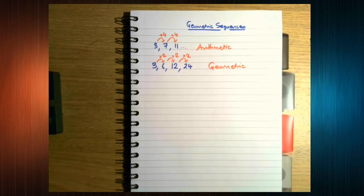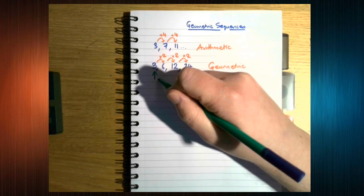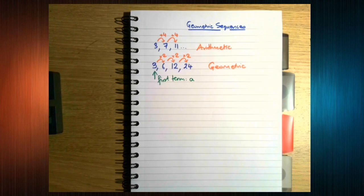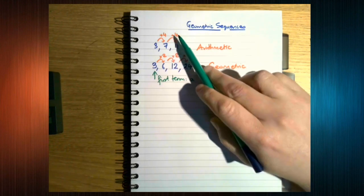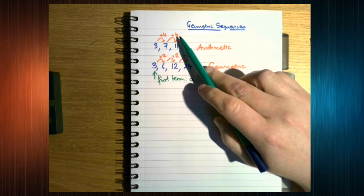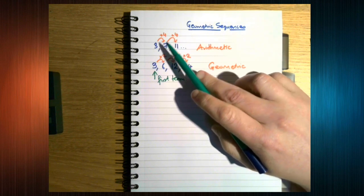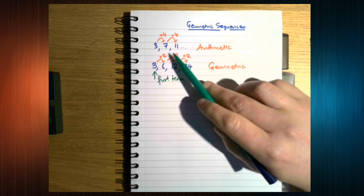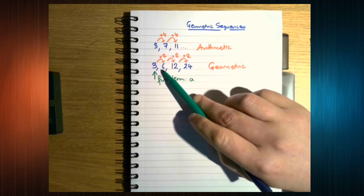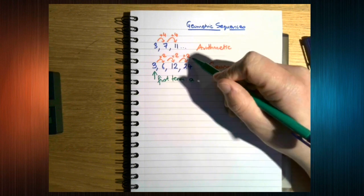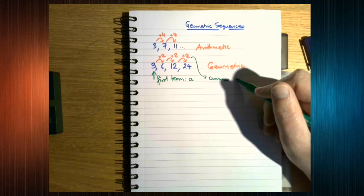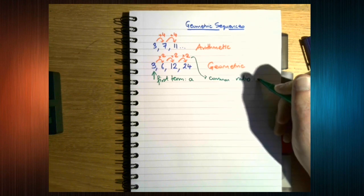Now, much like arithmetic sequences and series, we still need to worry about the first term, and we still call it A. However, this is a common difference because we are subtracting one term from its next one. Here we are dividing one term by its preceding one. That makes this a common ratio, which we call R.